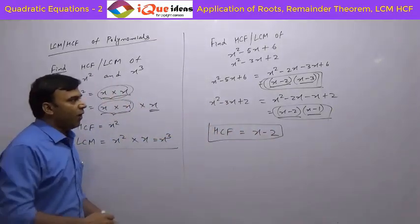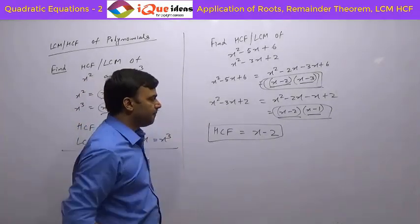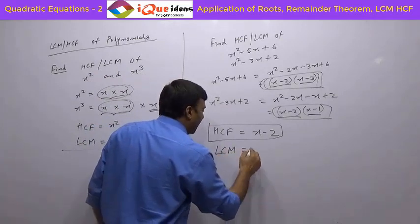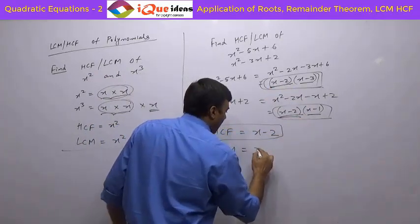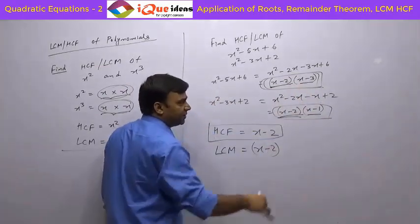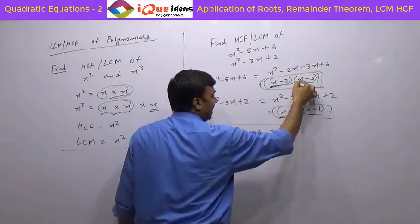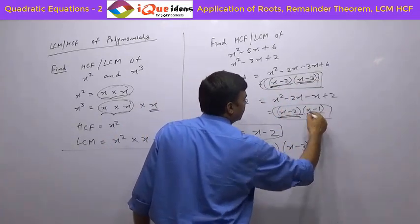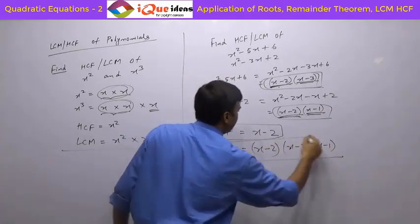So whatever is the common thing, just take it out — only the common thing. Now what about LCM? LCM is that common thing taken once and everything else. So x minus 2 is common, taken once. Then x minus 3 from the first and x minus 1 from the second. So this is the LCM.